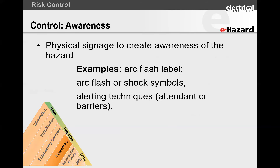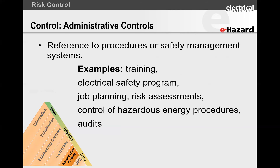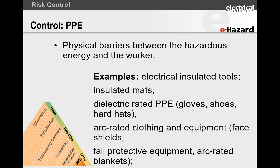The next control is awareness — I'm back to my engineers, safety officers, and supervisors. You can stick arc flash labels, put out warning signs, and set up barricading. Awareness is fantastic. Then you end up with the last two, which are least effective in terms of risk control. That is administrative controls — does Zahir have the required training to work on 2,300-volt systems, do I have an electrical safety program, risk assessments, control of hazardous energy procedures, audits, et cetera.